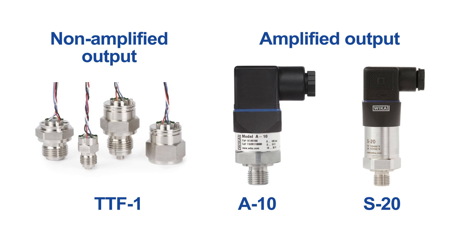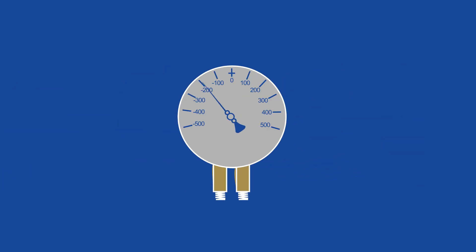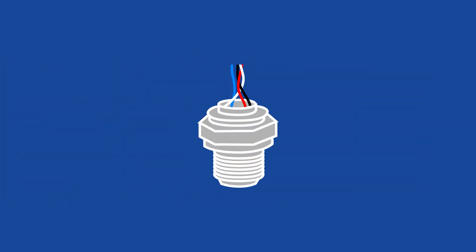In general, calling electronic pressure devices pressure sensors is an easy way to refer to next-generation instruments. But how do you decide whether a transmitter or transducer is right for your application? Accuracy, range, working temperature, and the medium are all determining factors when selecting the right pressure instrument for an application.